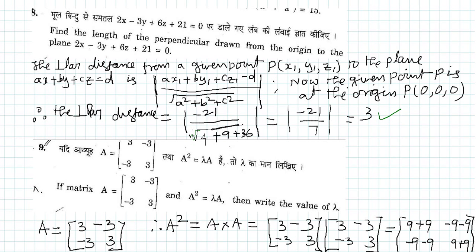...a times x1 coordinate, b times the y1 coordinate, c times z1 coordinate minus d divided by square root of a square plus b square plus c square.